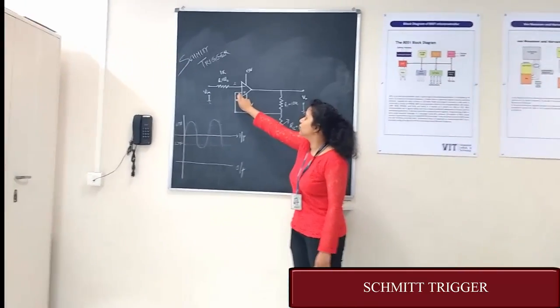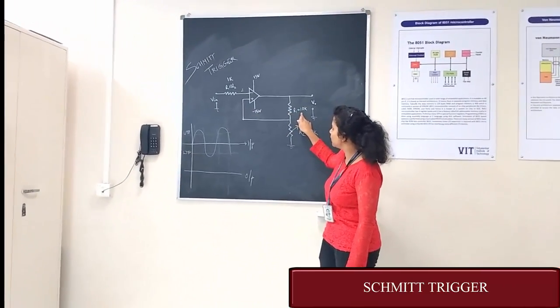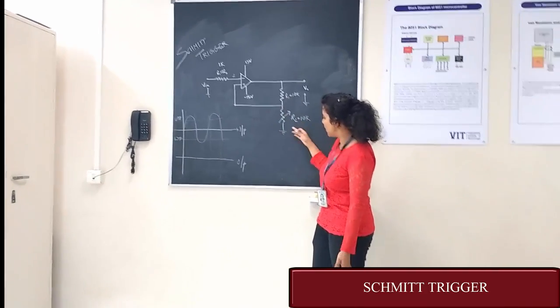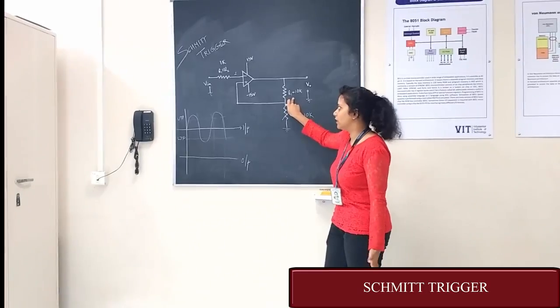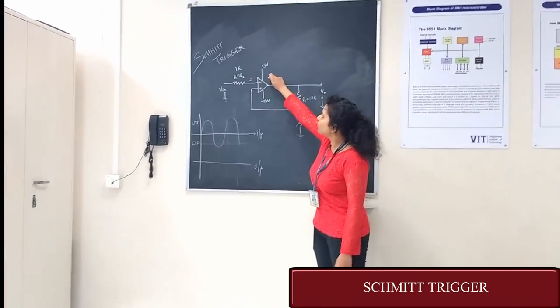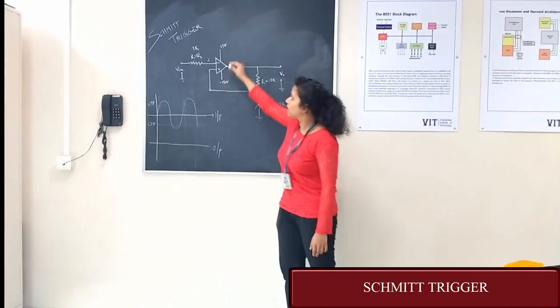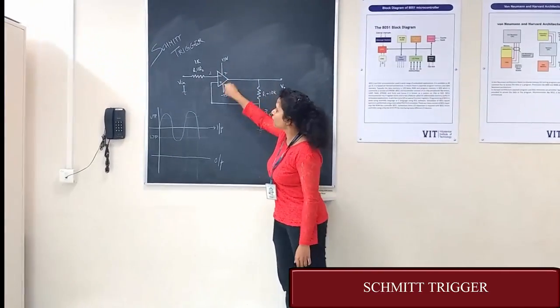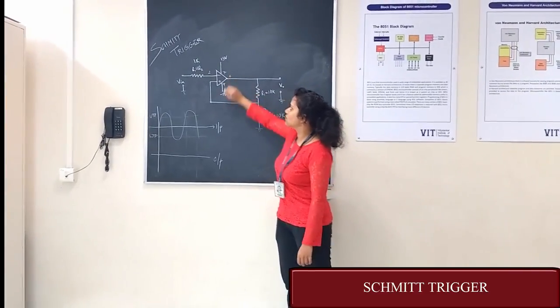And this non-inverting terminal is given a feedback resistance of 10K and a variable resistance of 10K. Here, it acts as a potential voltage divider. Now, we are giving 15V plus and minus voltage at pin 7 and pin 4 of op-amp respectively. The output is taken at the 6th pin.